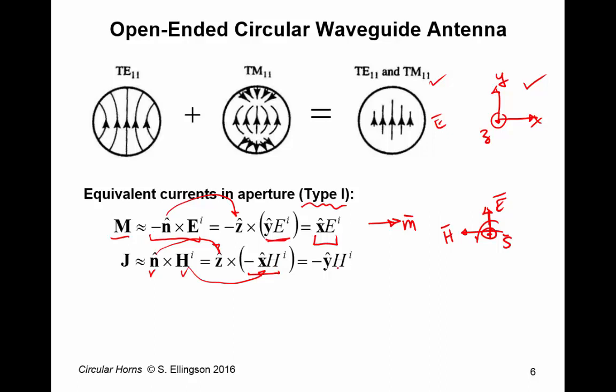And then, if we do that calculation, we find out that the equivalent electric current must be minus Y-hat polarized. In other words, it must go like this.